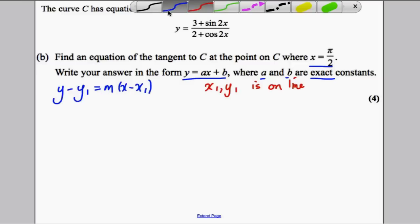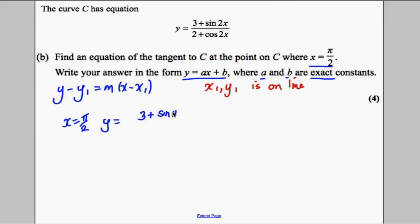OK, now we know, firstly, let's find a point on this line. When x is pi by 2, y is the answer you get when you substitute in pi by 2 in here. So it would be 3 plus sine of pi over 2 plus cosine of pi. Now sine of pi is 0 and cosine of pi is negative 1, so this would simply give you the answer 3.